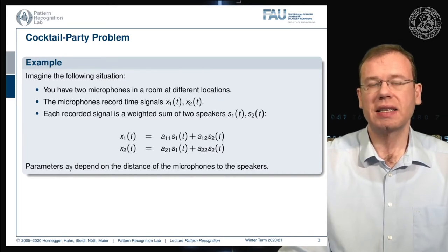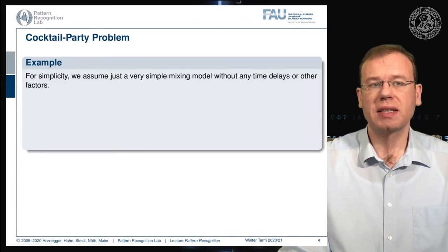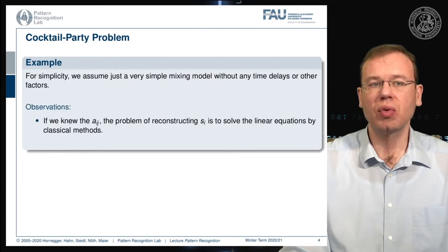And this can be done using factorization methods and in particular the idea of independent component analysis. So for simplicity we just assume a very simple mixing model without any time delays or further factors here. And this then means if we knew the AIJ, the problem of reconstructing S is to solve the linear equations by classical methods because we simply need to compute the inverse of this so-called mixing matrix.